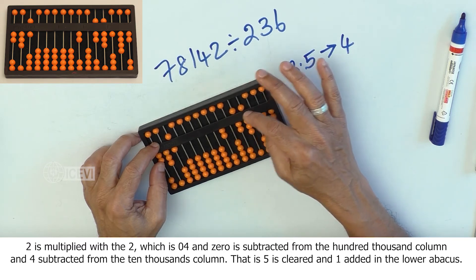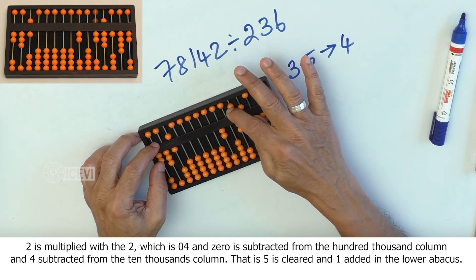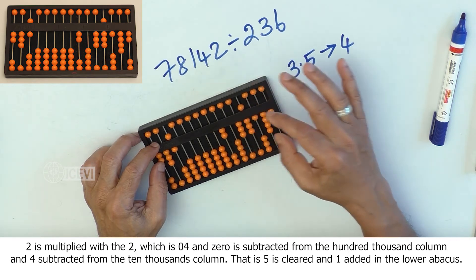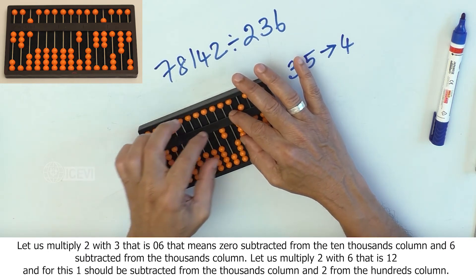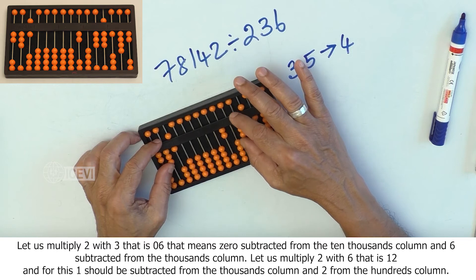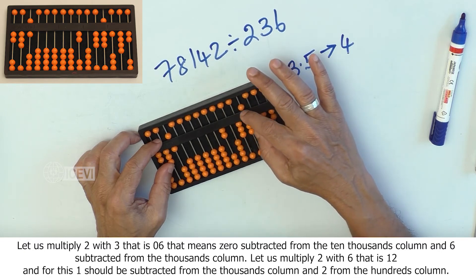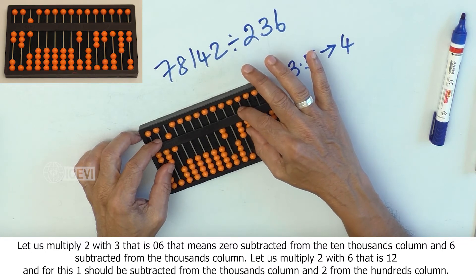That is 5 cleared in the upper abacus and 1 added in the lower abacus. Let us multiply 2 with 3 that is 06 that means 0 is subtracted from the 10,000 column and 6 subtracted in the 1,000 column.